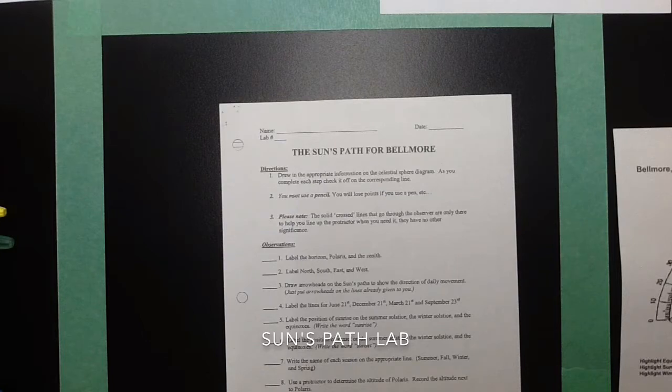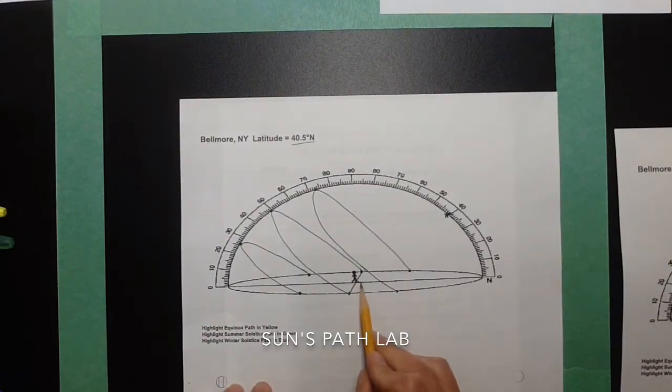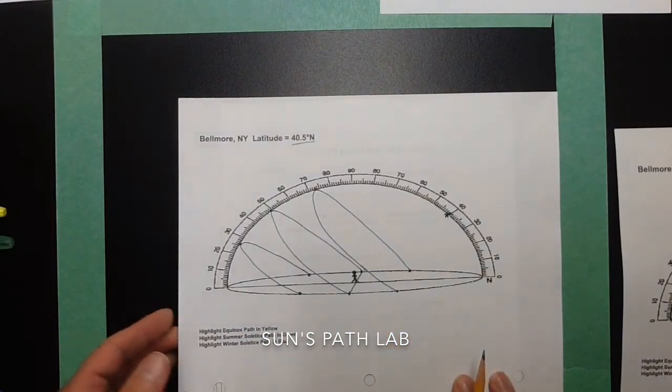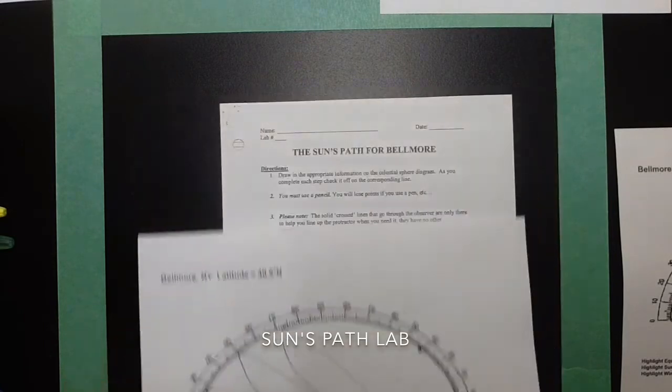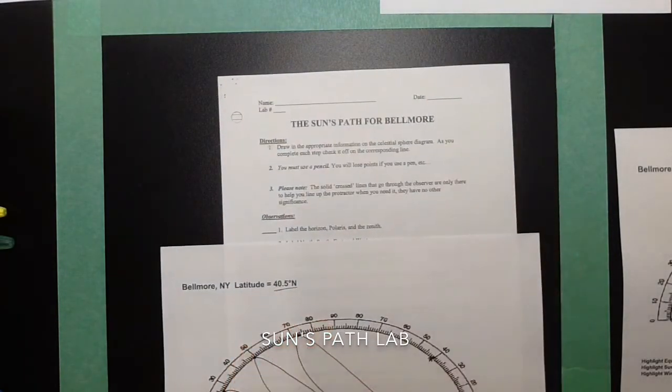The sort of dashed lines that are going across on the celestial sphere model right here, these lines are lines of sight towards each direction along the horizon or along the azimuth. So let's look at the directions. Number one says label the horizon, Polaris, and the zenith.